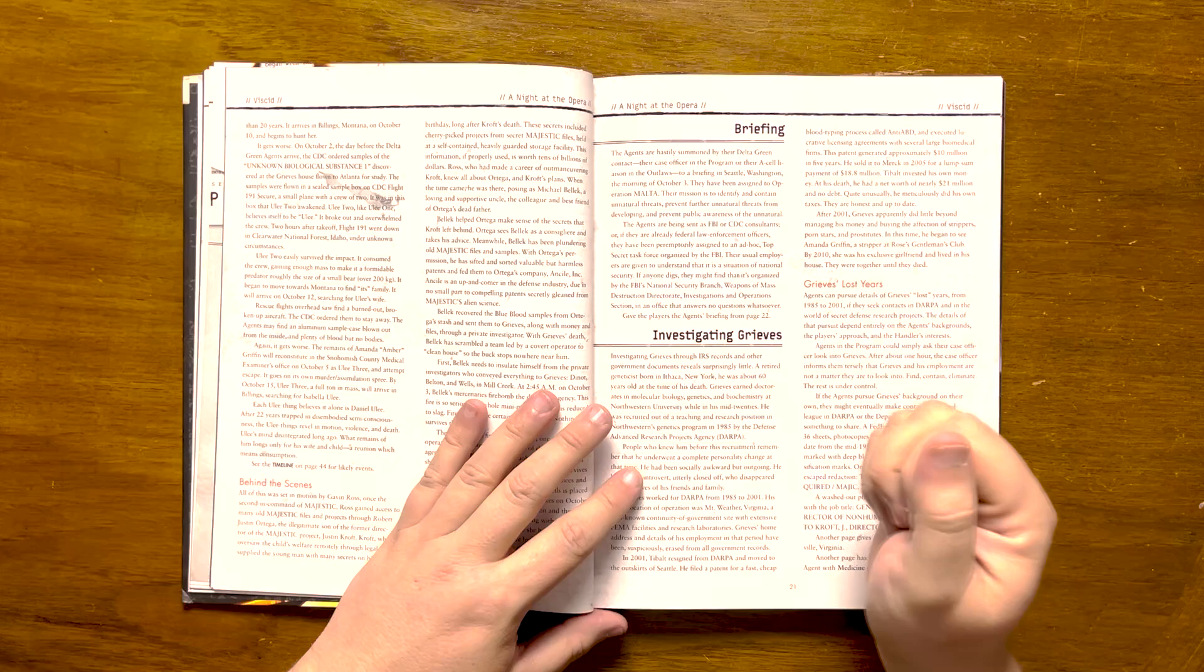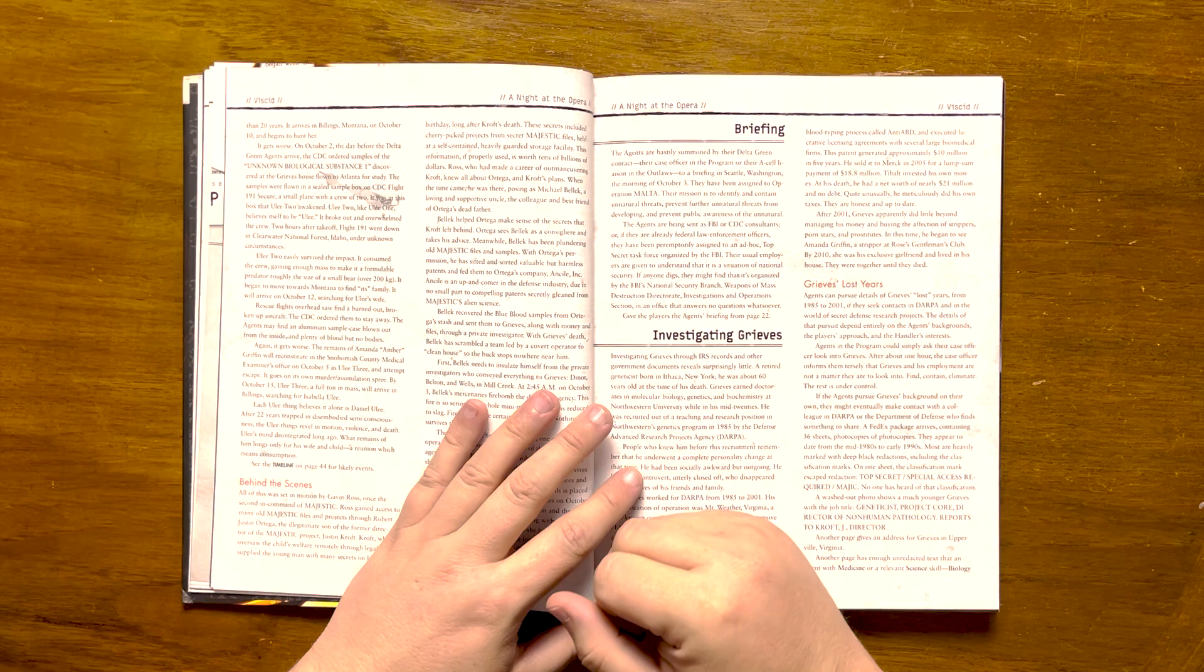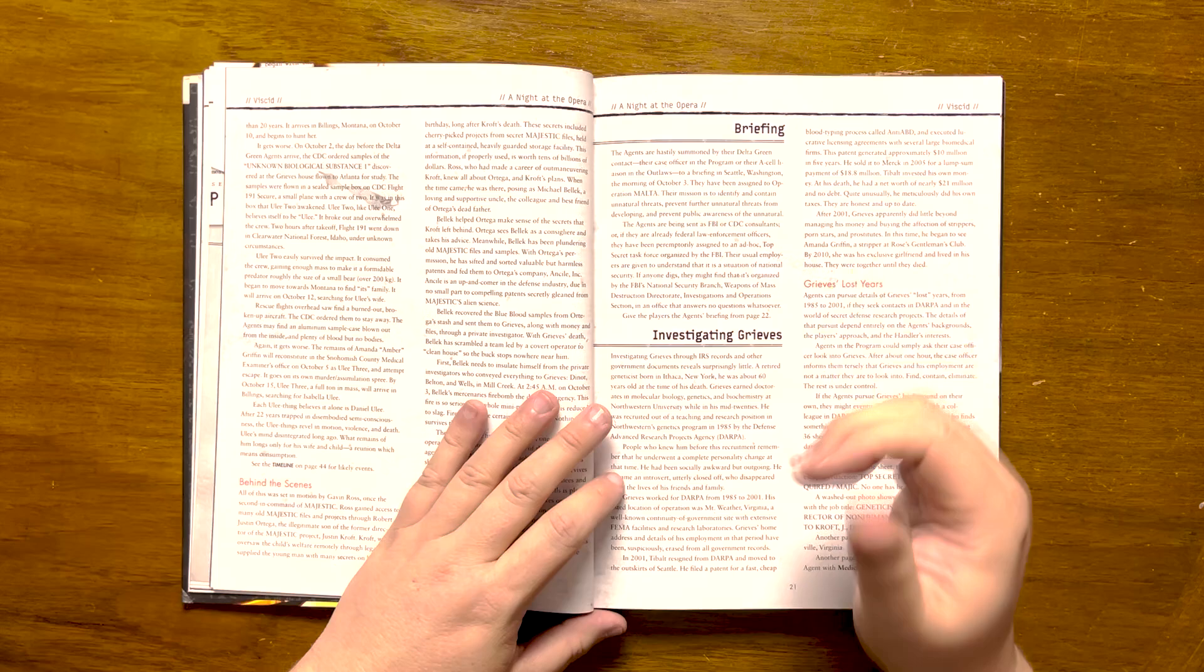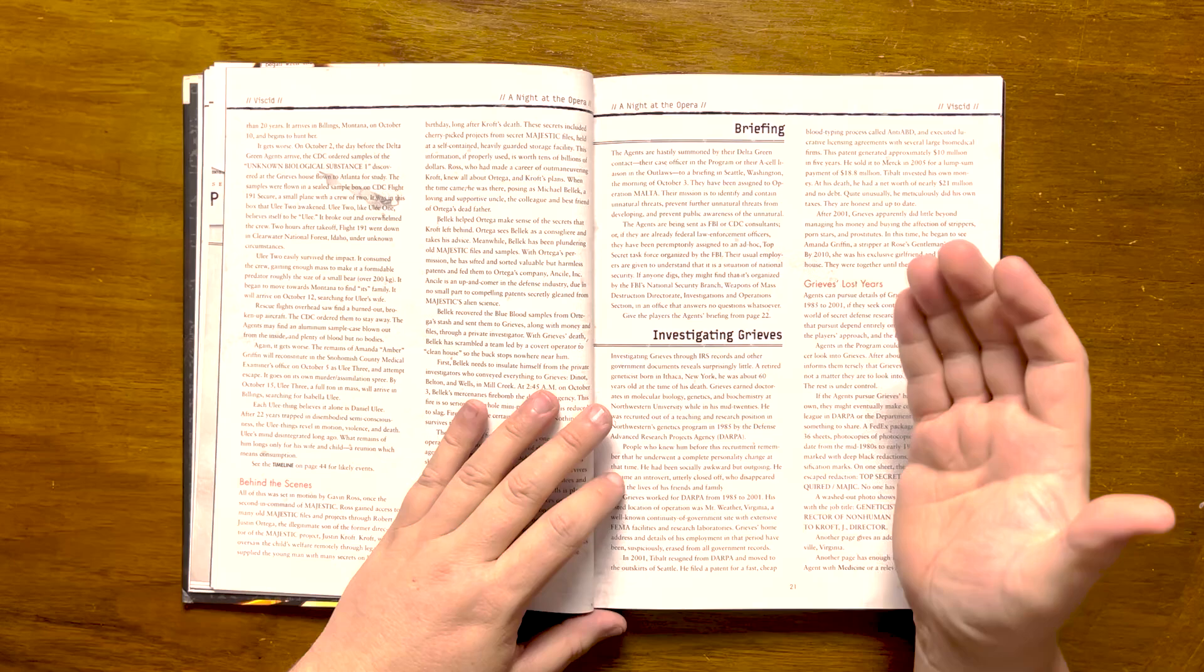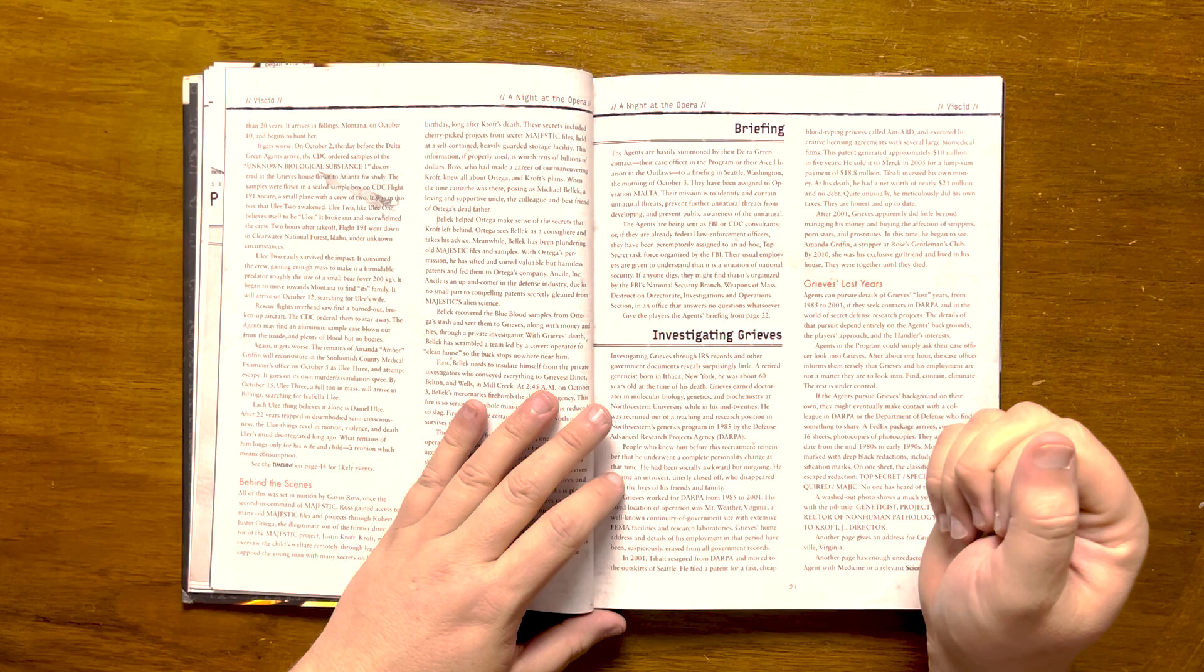Following this, we have a section detailing the briefing the agents get for the mission, codenamed Malta. It gives us a summary with a detailed timeline for them, and then it goes into investigating Greaves. It details various methods that the agents can use and tells us what can be dug up, as well as his secret history. His body disintegrated when sunlight hit it into a toxic, unidentifiable goo. Fortunately, the transformation was captured over a series of 16 photos.